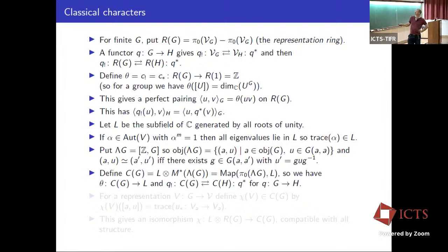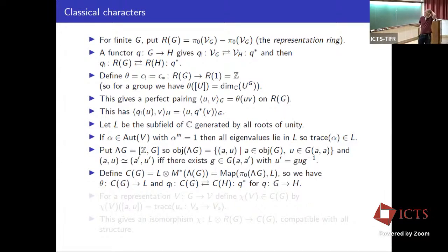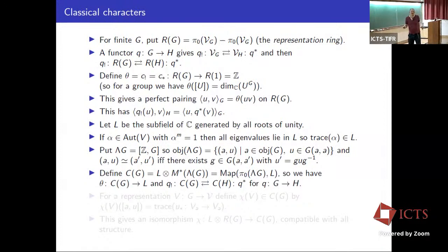Given this groupoid λG, we can form M^*(λG) — the rational vector space of maps from π_0(λG) to Q — and tensor it with the field L to get C(G), the ring of maps from isomorphism classes in λG to L, which is a ring under pointwise multiplication. From the previous discussion we get a map theta from C(G) to L, and maps Q lower shriek: C(G) → C(H) and Q upper star: C(H) → C(G) whenever we have Q: G → H.